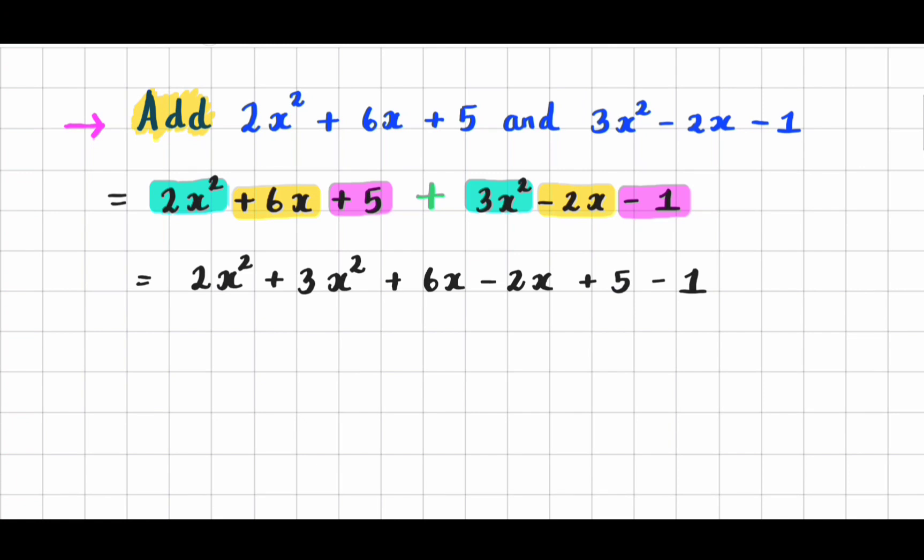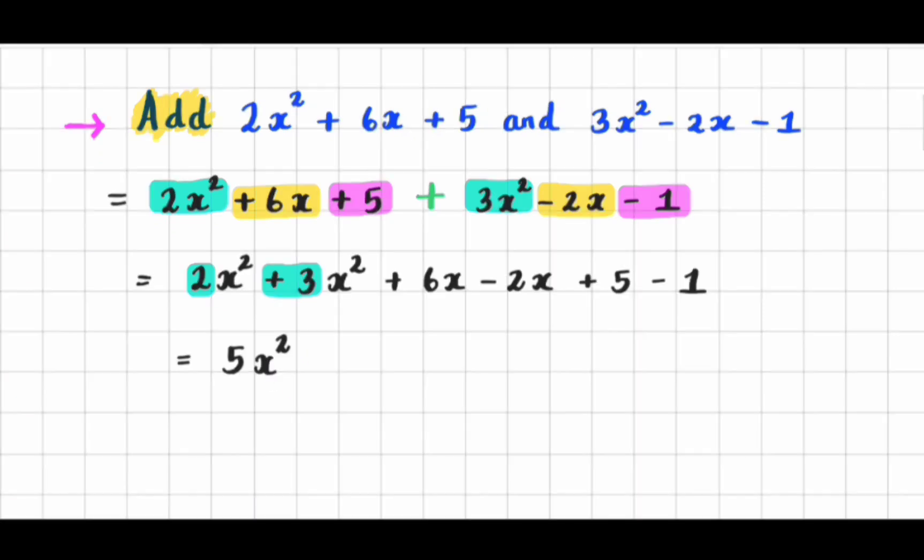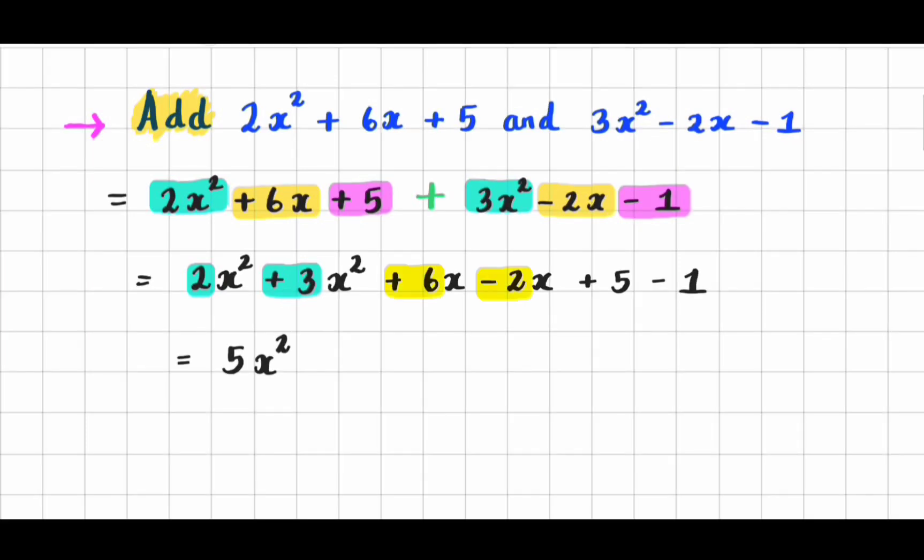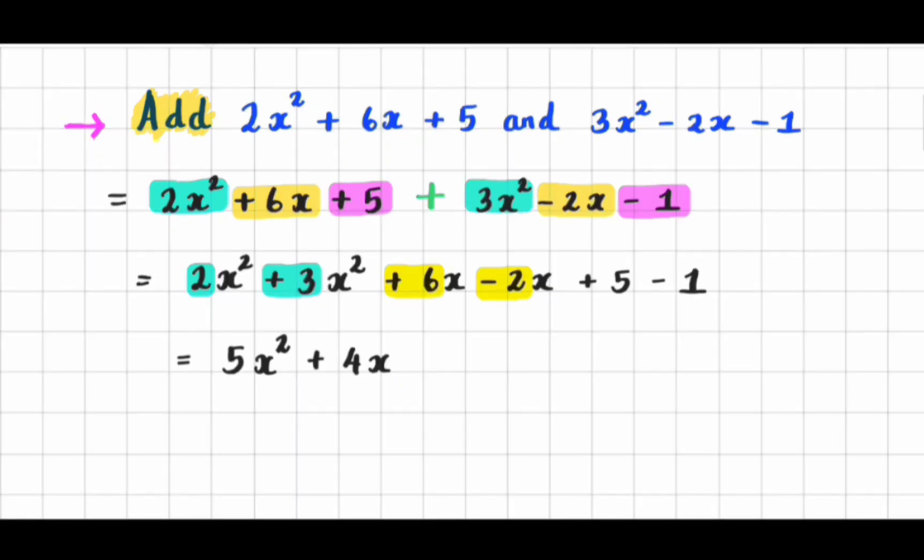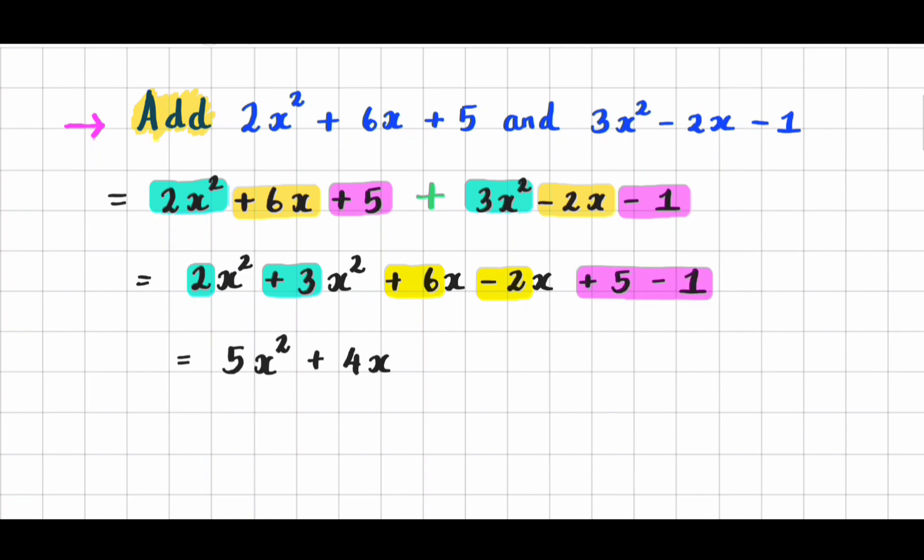Step 2: Add or subtract like terms. Which is 2x squared plus 3x squared equals 5x squared, plus 6x minus 2x equals plus 4x, and plus 5 minus 1 equals plus 4.